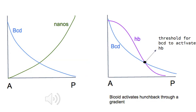In the first graph, you can see a gradient difference between Bicoid and nanos on a posterior-anterior axis. In the second graph, hunchback is found in a higher amount near the anterior because Bicoid activates it. The amount of Bicoid must reach the threshold amount for it to activate hunchback. There is less hunchback towards the posterior end because nanos represses it.